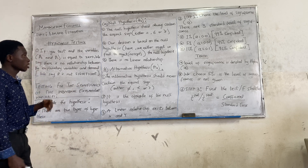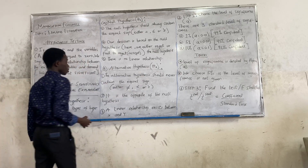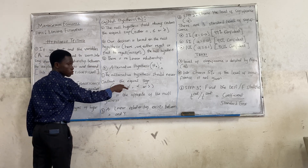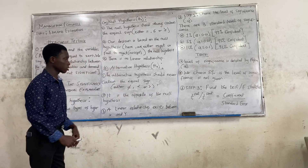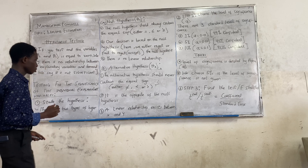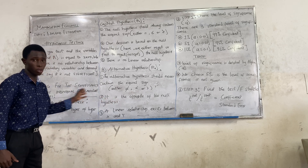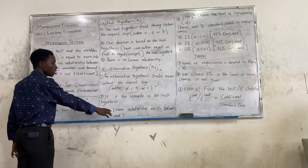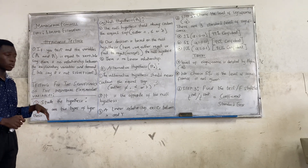The alternative hypothesis is denoted by a capital H with a subscript 'a.' The alternative hypothesis should never contain the equal sign — either 'not equals,' less than, or greater than. It is the opposite of the null hypothesis. With the alternative hypothesis, there is a linear relationship between X and Y. With the null hypothesis, there is no linear relationship.